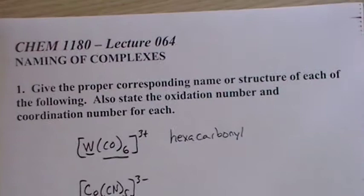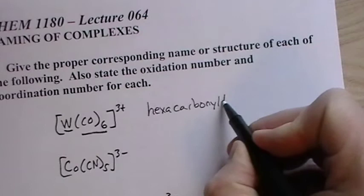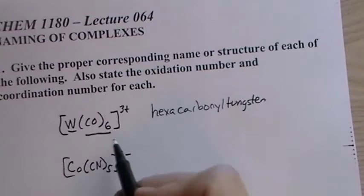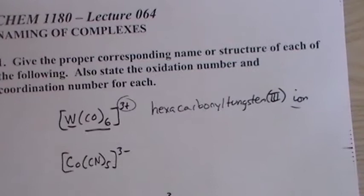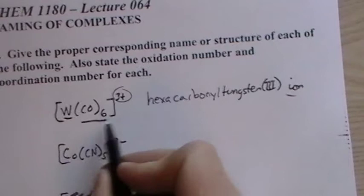Now we have tungsten here, W, and it's part of the cation, so we leave the name alone. We call it hexacarbonyl tungsten, but then we also need to know its oxidation state. Carbonyls are neutral, so the charge must be the same as the charge on the complex. So this is tungsten(III), and then you need to put ion, make sure you put ion in there. So hexacarbonyl tungsten(III) ion.